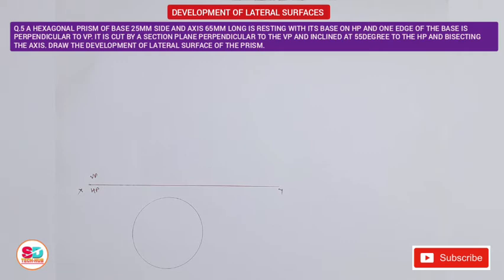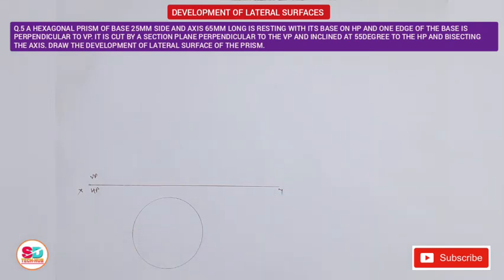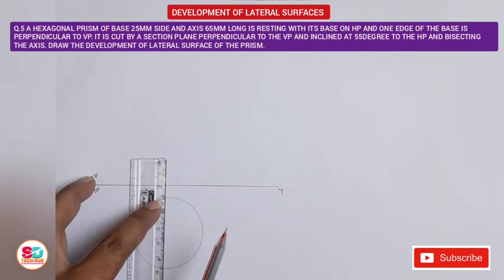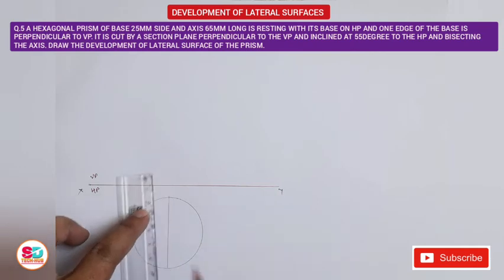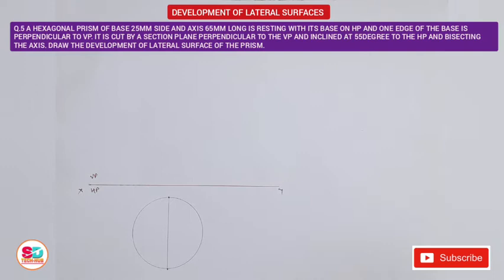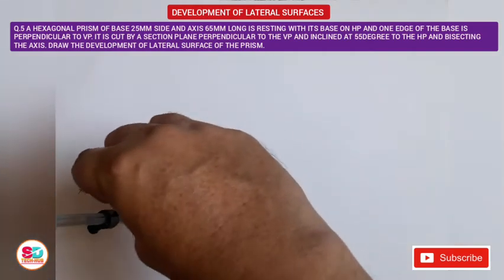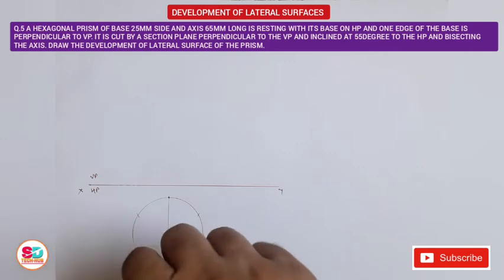One condition is that one edge of the base is perpendicular to the VP, meaning that edge must be vertical. So we draw a vertical diagonal in the top view perpendicular to the XY line — these are two corners of the hexagon. Then we take a distance of 25 mm equal to the base edge to locate the remaining four corners.